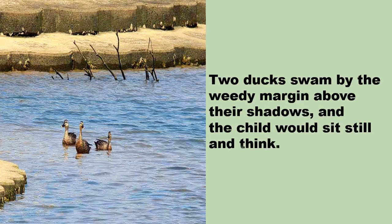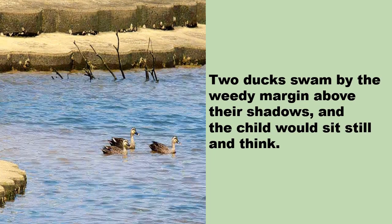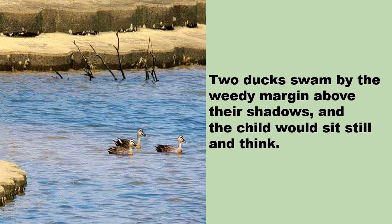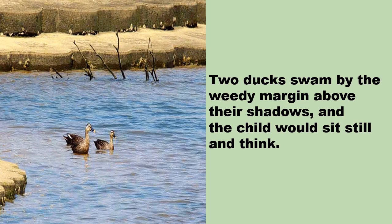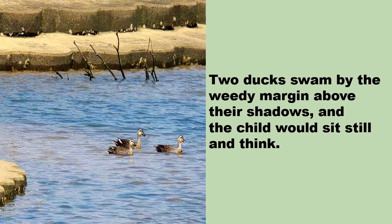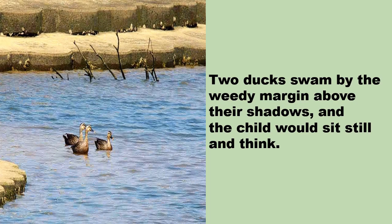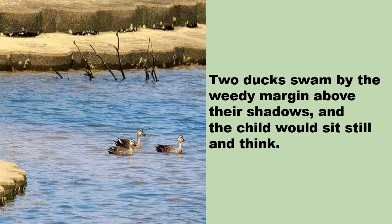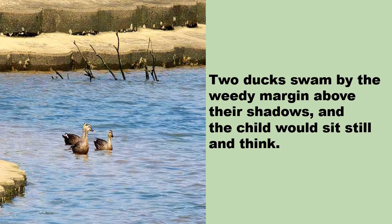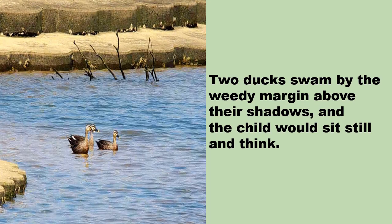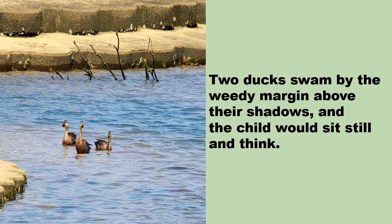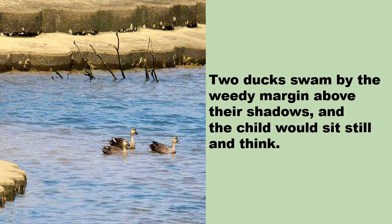Two ducks swam by the weedy margin, above their shadows, and the child would sit still and think. The poet is beautifully describing the surroundings — two ducks are swimming by the weedy margin, the side of the pond filled with weeds, the grass that grows in the pond water area. You could see the shadows falling on the water, and there is the child who came down from the window, sitting still and thinking — what is the child thinking?